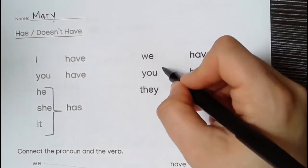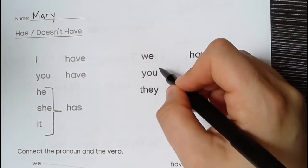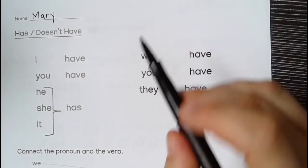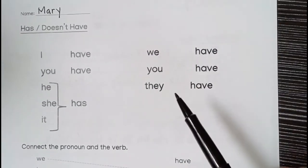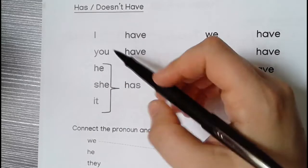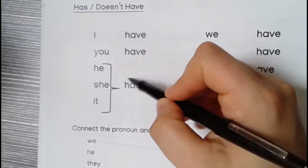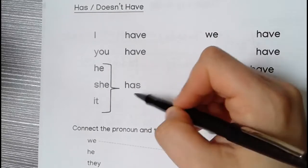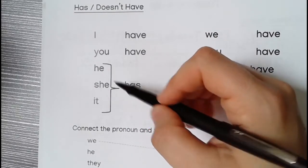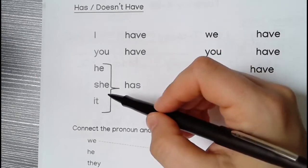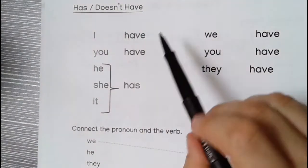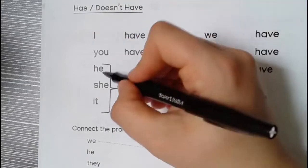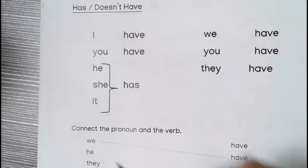This 'you' is more than one person — two, three, four, five people. You have pencils. They have pencils. But when you say he or she, it's has. He has a pencil. She has a pencil. Same word — it just changes for he, she, and it.